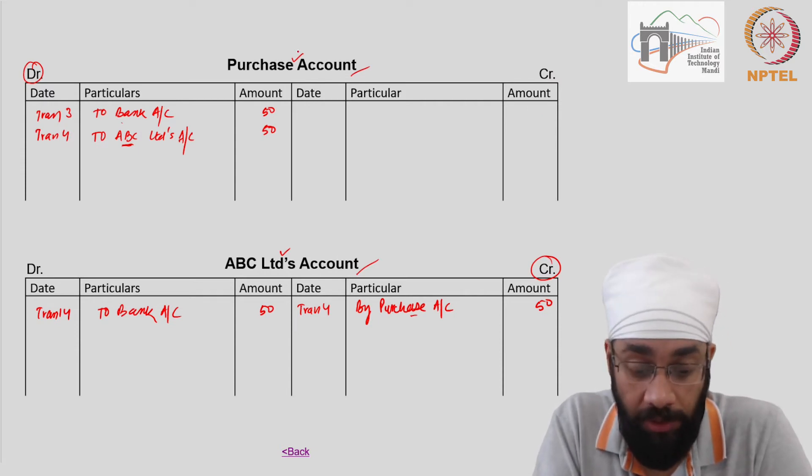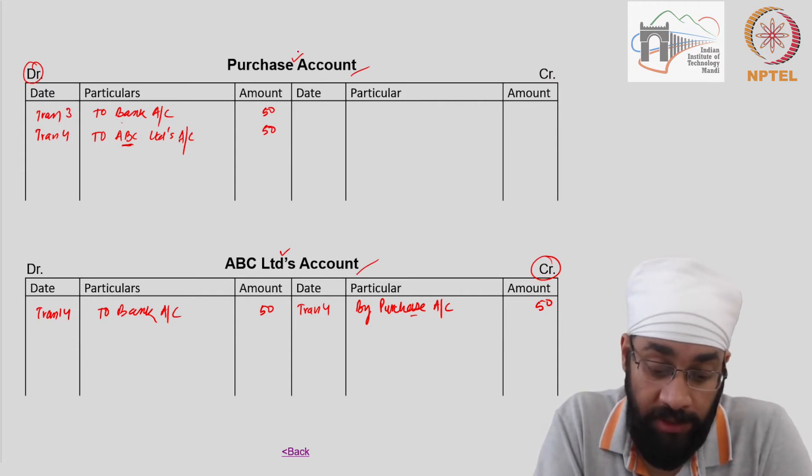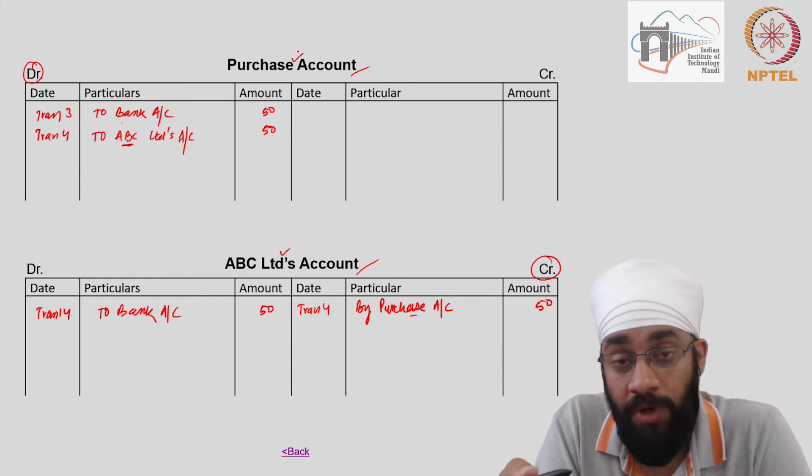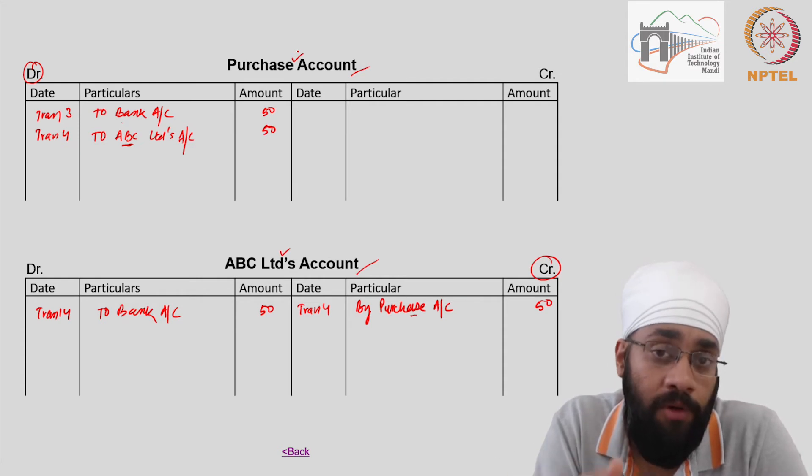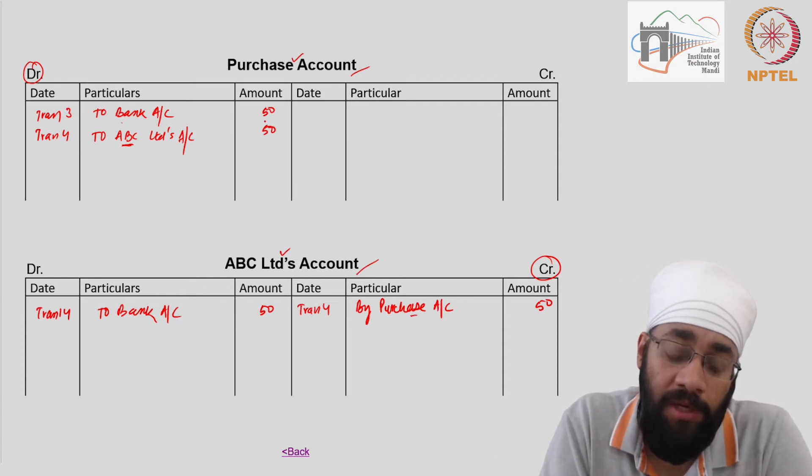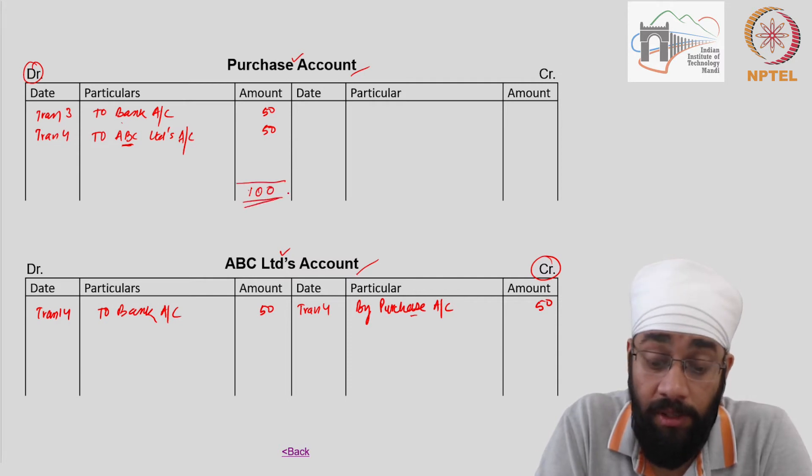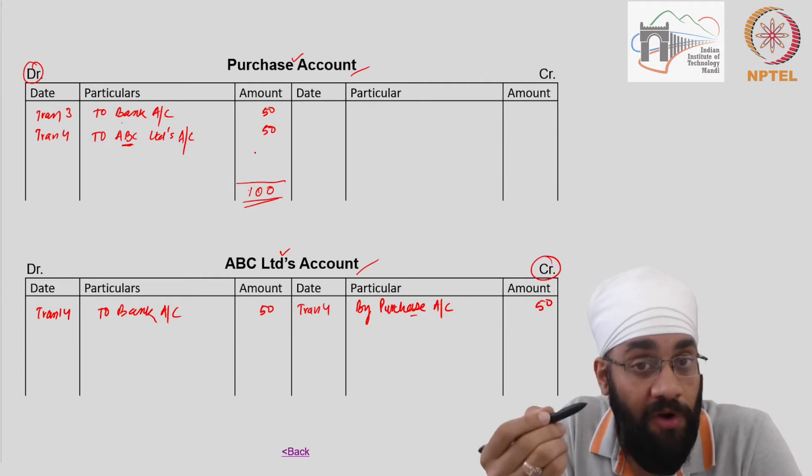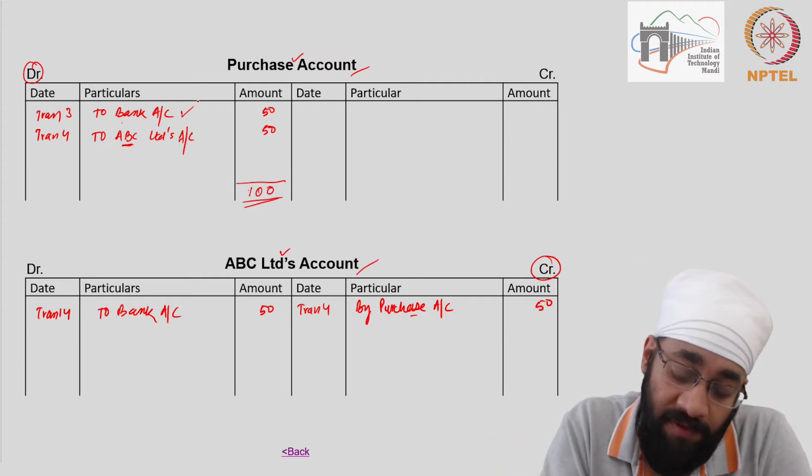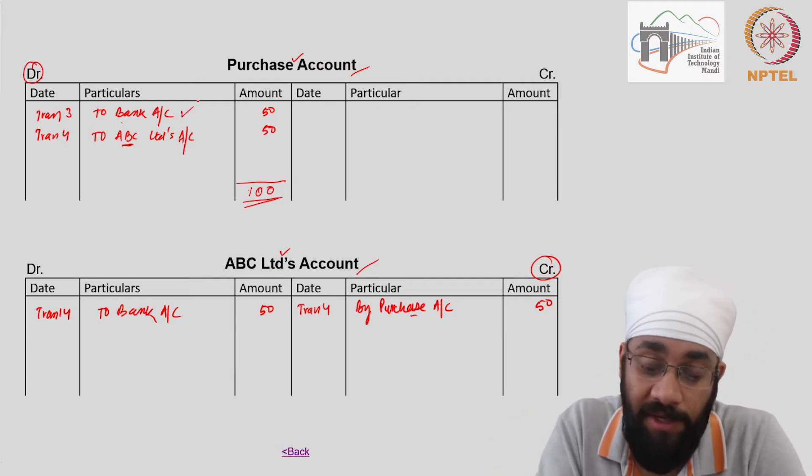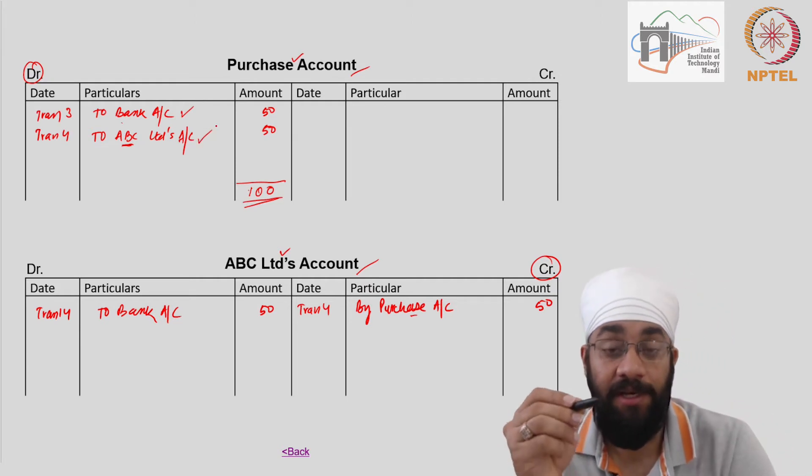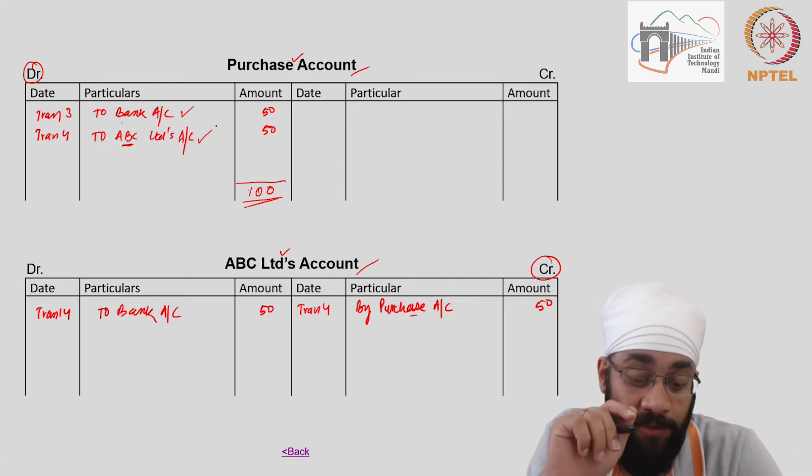Now purchase account tells us what is the total amount of purchases that you've done during the year from your vendors. We have total purchase of 100 during the year. If we look at this column here, what was the mode of these purchases? You purchased 50% on cash and 50% needs to be paid to the vendor.